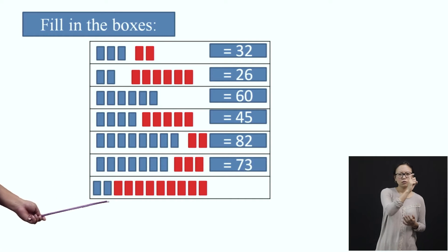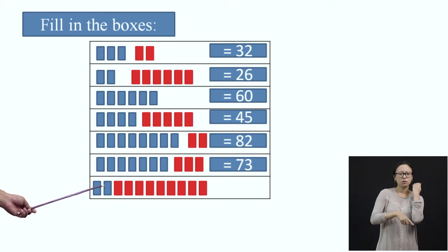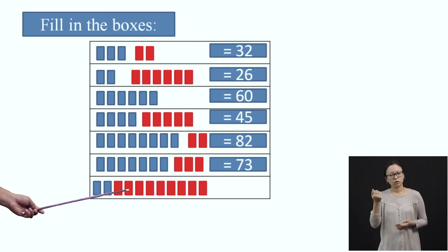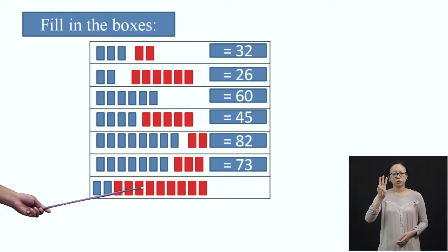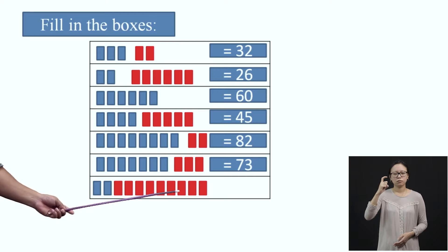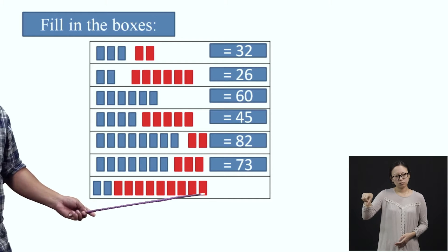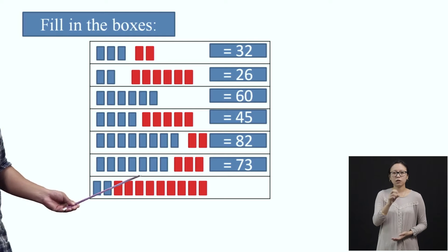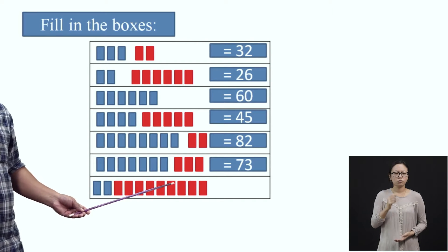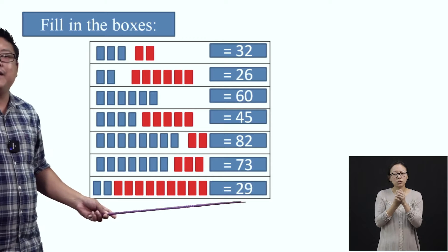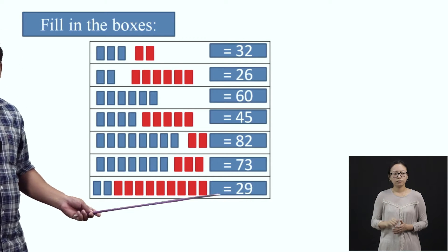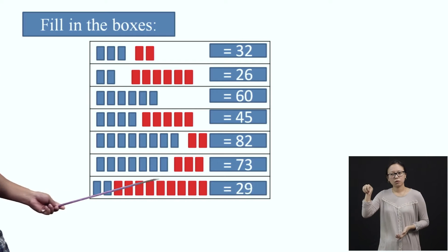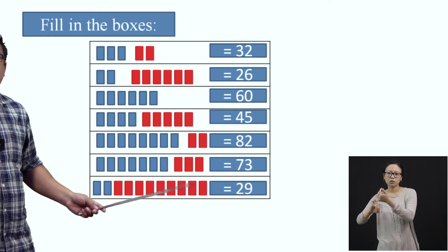And the last one — we have two blue strips, and let's count the red strips: one, two, three, four, five, six, seven, eight, nine. So, we have two blue strips and nine red strips, that is equal to twenty-nine. Two is in the tens place, nine is in the ones place, so we will call it as twenty-nine.